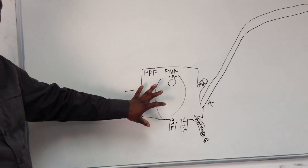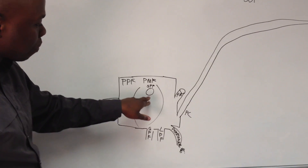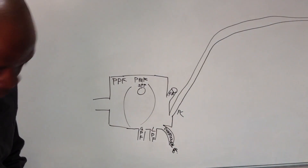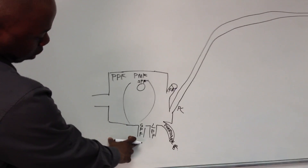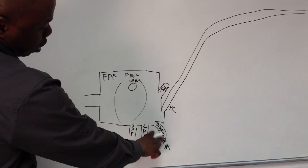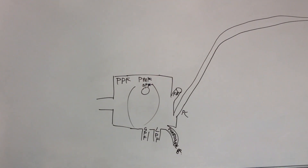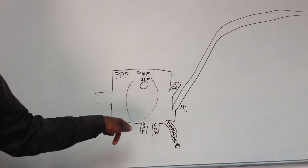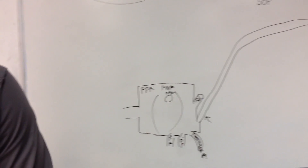Last thing: if you look over here, this is the pterygopalatine fossa. Looking into it laterally, you look through a fissure - which is a gap - and then you've got the sphenopalatine foramen. There's the greater palatine foramen and then the lesser palatine foramen at the bottom. There's an exit point for some pharyngeal branches, and then foramen rotundum. We'll start off with foramen rotundum and then point to all the things that go in and out of it.